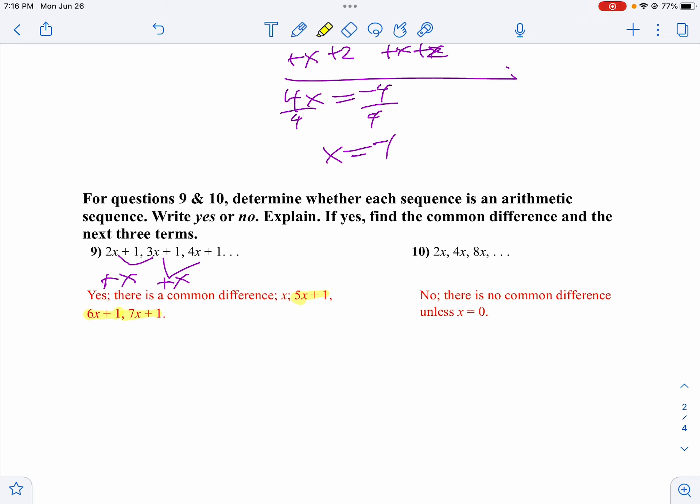Now on number 10, from 2x to 4x, we're going up by 2x. From 4x to 8x, we're going up by 4x. There's a pattern here, but it's not arithmetic. We're multiplying, not adding. So there's no common difference unless x would be 0. Because then everything would be 0. Your common difference would be 0.